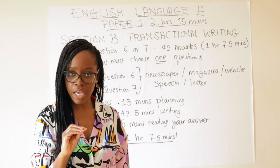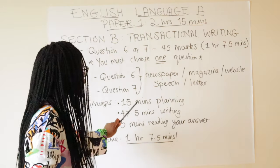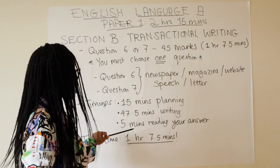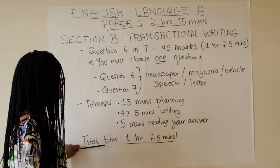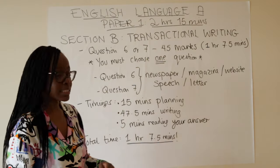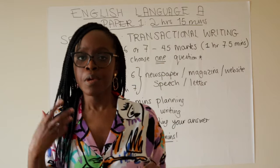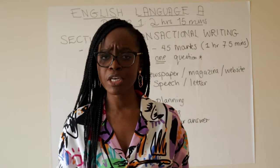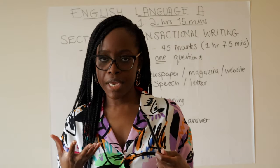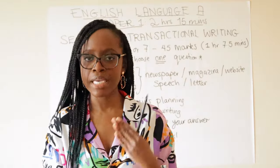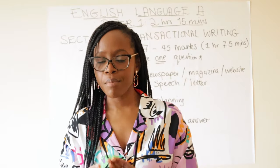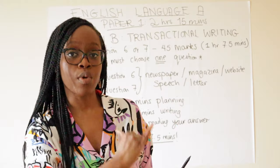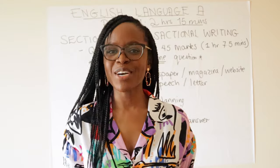Always have a wristwatch with you in the exam — a cheap Casio-style watch is fine. Apple watches aren't allowed, but there are also clocks around the room. Be very strict and disciplined about how you allocate your time. To quickly recap Section B: 15 minutes planning, 47.5 minutes writing, and 5 minutes reading over your answer — totalling one hour and 7.5 minutes. Keep these timings sacred; any time you overspend on one question, you're sacrificing marks on another.